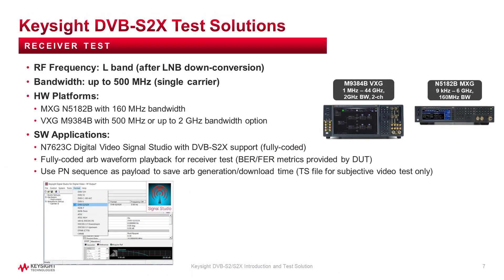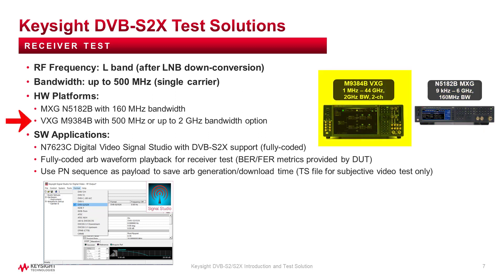For the receiver test, it just needs a signal source with a fully coded DVB-S2X waveform. The signal generator can be the MXG N5182B with bandwidth up to 160 MHz and RF frequency up to 7 GHz, or the M9384B VXG with bandwidth 500 MHz or up to 2 GHz and RF frequency up to 44 GHz. The N7623C signal studio for digital video can generate the fully coded DVB-S2X signal for BER or PER testing, with payload options including test files for subjective video testing or data payloads like all zeros, all ones, or PN sequence.